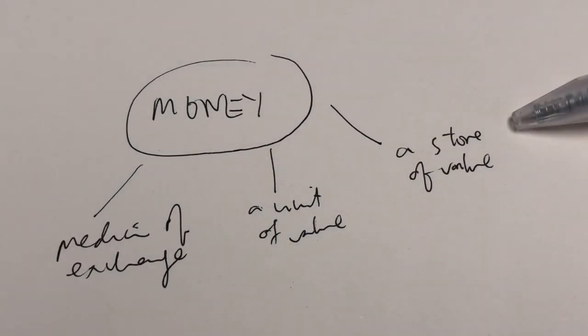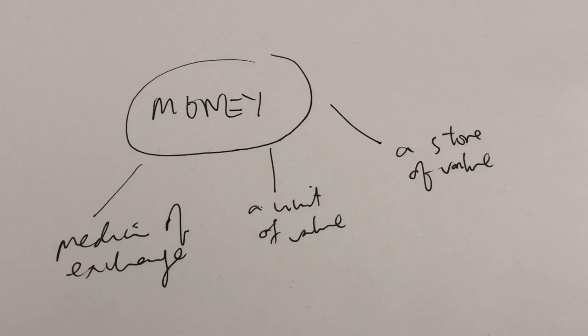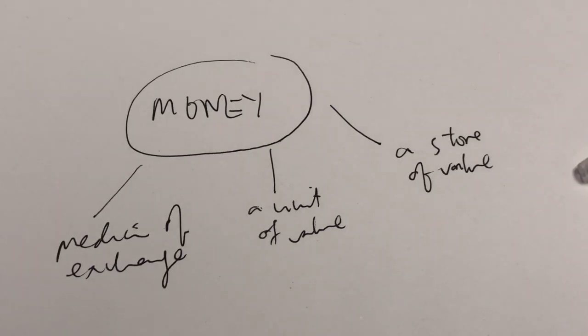Moving on to the third function of money, which is as a store of value. Money also serves as a store of value in the sense that it can hold its value over time. This enables the transfer of purchasing power from one time period to another. For example, if Ali has RM100 today, he can hold the money and spend it tomorrow, next month or even next year.